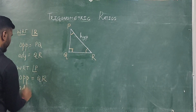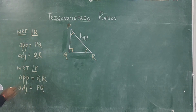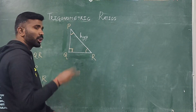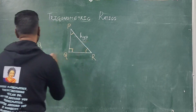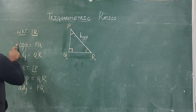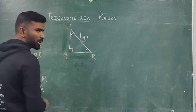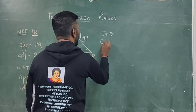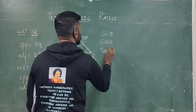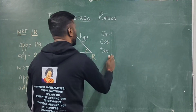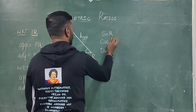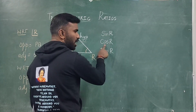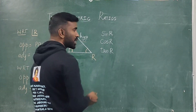With respect to angle P, the adjacent side will be QR. If you understand this, you will definitely get two marks. You should know the three sides of the right angle triangle: hypotenuse, opposite, and adjacent. Opposite and adjacent will vary based on which angle you choose. There are six trigonometric ratios: sine theta, cos theta, tan theta — and the other three are just their reciprocals.